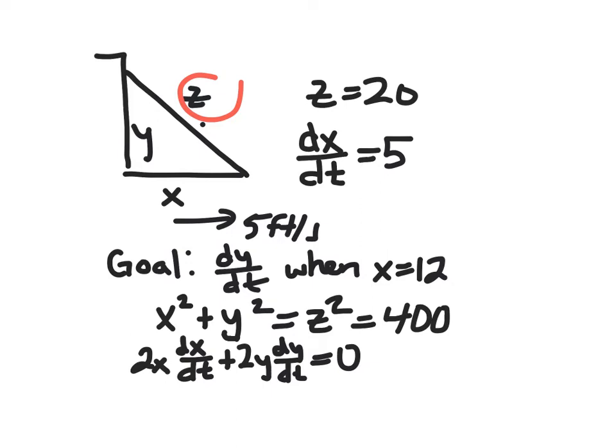So we want to find dy/dt. We have x, right? x is 12. We have dx/dt. That's 5. Our issue is that we have two unknowns over here. We don't know y yet. So how can we figure that out? Well, we can actually use the Pythagorean theorem. We know x. We know z at that time.